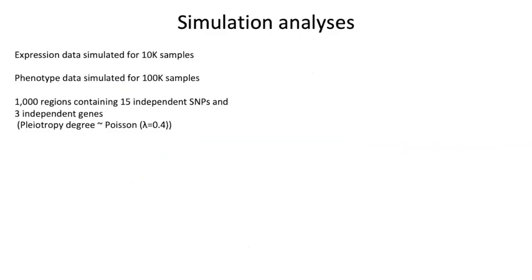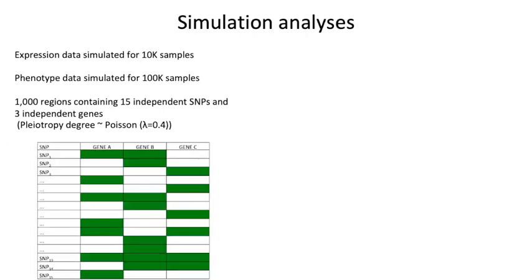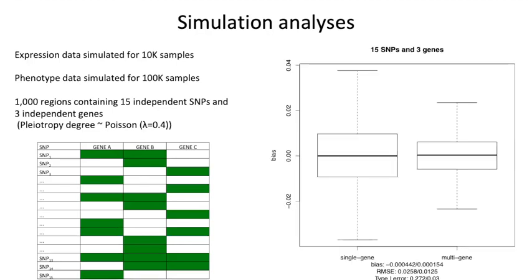To demonstrate the advantages of our multi-gene approach, we performed a simulation analysis where we simulated 1,000 regions containing 15 independent SNPs and 3 genes. For each SNP we simulated the number of genes affected — for example, SNP1 is an eQTL for gene A and gene B, SNP2 is an eQTL only for gene B, and so on. Our results showed that in case of pleiotropy, the multi-gene approach gives a better estimate of the causal effect: the root mean square error is more than tenfold lower. More importantly, without losing power, the multi-gene approach better controls the type 1 error, as opposed to the single-gene approach which can easily reach 20%.